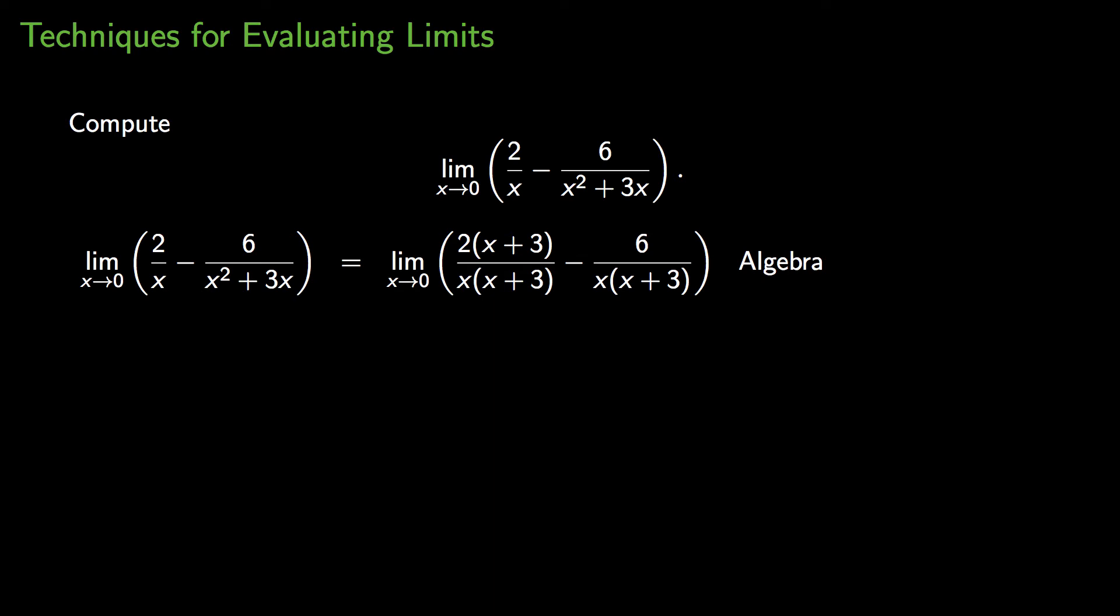And so x squared plus 3x is equal to x times x plus 3. So that will actually be the common denominator. Notice how I've taken the 2 over x and I've multiplied by x plus 3 over x plus 3.